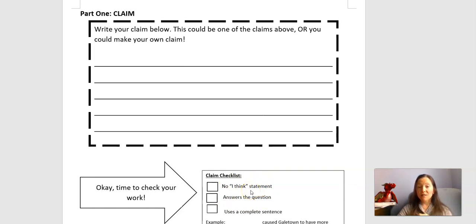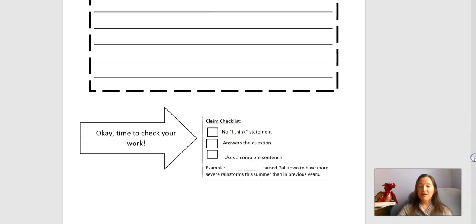What's causing more severe rain? And then we're using a complete sentence. So down here we even have a little example. Blank. This is what you're thinking. Caused Galetown to have more severe rainstorms this summer than in previous years. So I made an example earlier about the warmer weather. But you could decide that it's a different factor that you want to argue. Or you could decide that multiple factors influence the weather in Galetown.